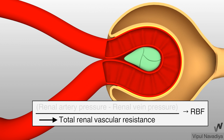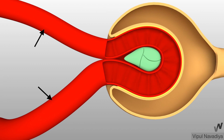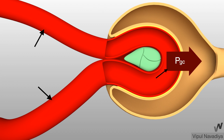Among these two, our body uses resistance to control renal blood flow. The combined resistance of afferent and efferent arterioles determines the renal blood flow. But their individual resistance is also important, as they have distinct effects on glomerular capillary hydrostatic pressure. So now we will study these effects.